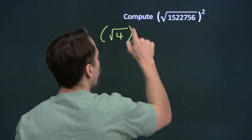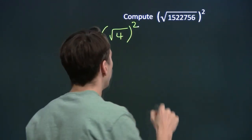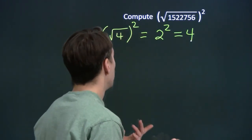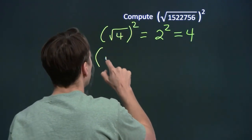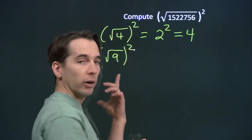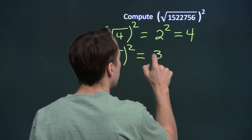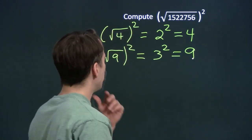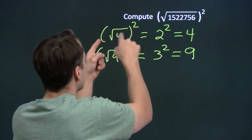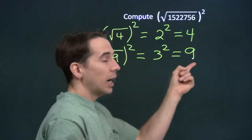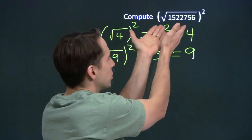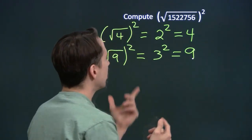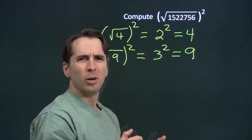Let's try a simple square root of 4: the square root of 4 is 2, and 2 squared is 4. Let's try another simple one with 9: the square root of 9 is 3, and 3 squared gives us 9 back. If I square the square root of 4, I get 4. If I square the square root of 9, I get 9. So we don't have to go through prime factorization of this gigantic number, find the square root, and then square it. We think the answer is just going to be that number back.